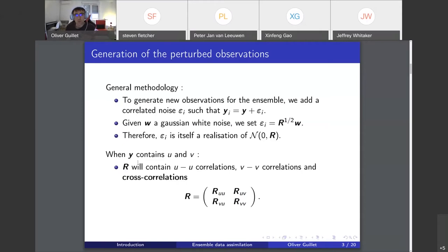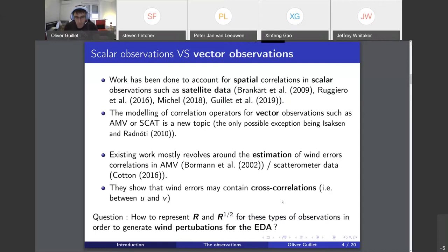When y contains two components, u and v for example, R will contain u-u correlations, v-v correlations, and cross-correlations between the two components of the wind. R takes the following shape here at the bottom of the slide. What method is actually available to model R for wind data, R minus one, R one half, square root of R?